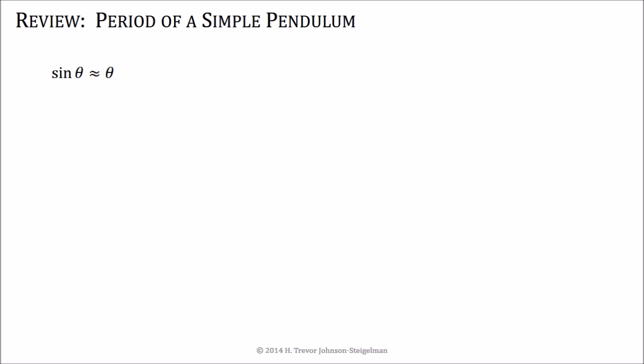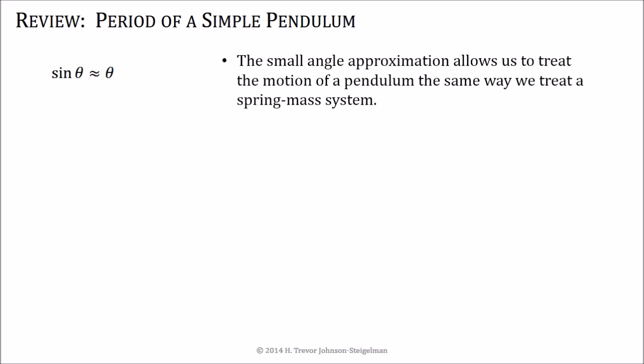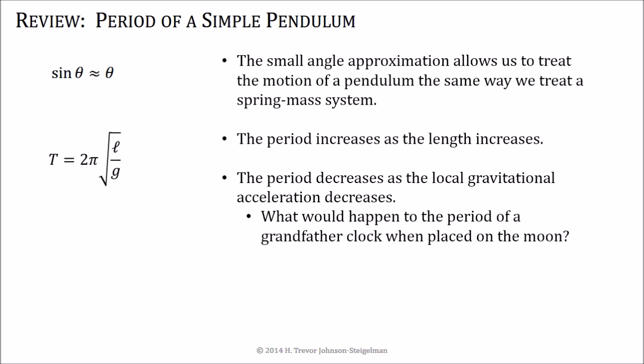Finally, in review. We can use a small angle approximation, which is sin θ is approximately equal to θ as long as you're measuring in radians, that we can treat the motion of a pendulum the same way we treat a spring mass system. Using this result, we found that the period of a pendulum is equal to 2π times the square root of the length over the gravitational acceleration. And from this equation, we can see that the period increases as the length increases. The period decreases as the local gravitational acceleration decreases.